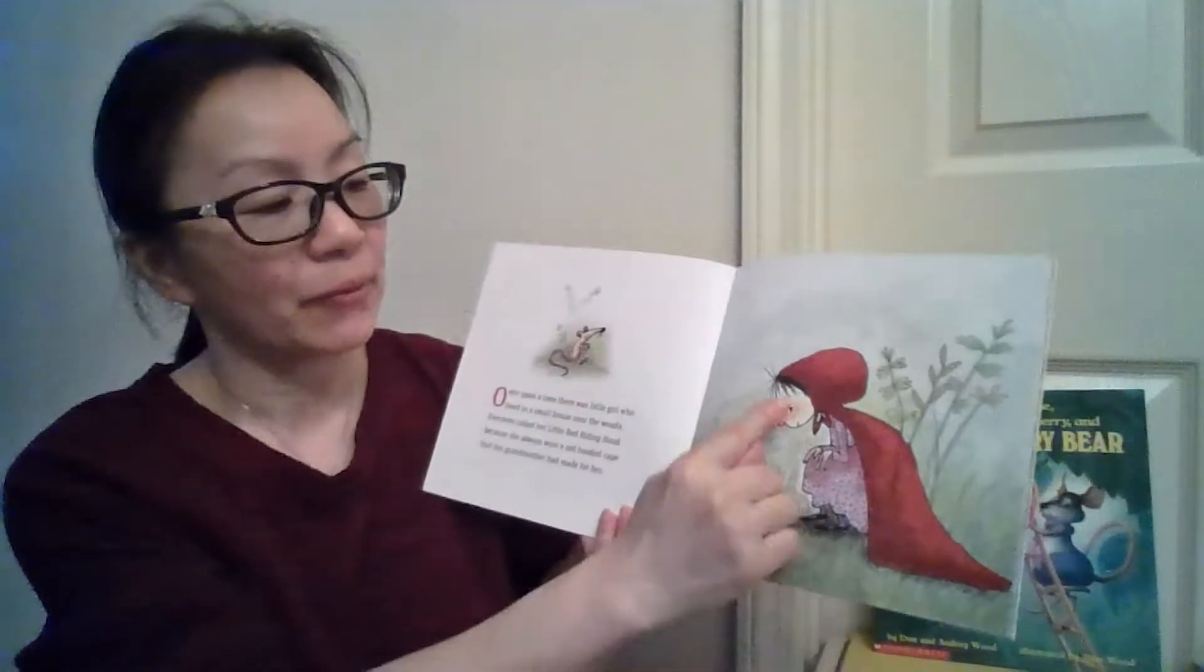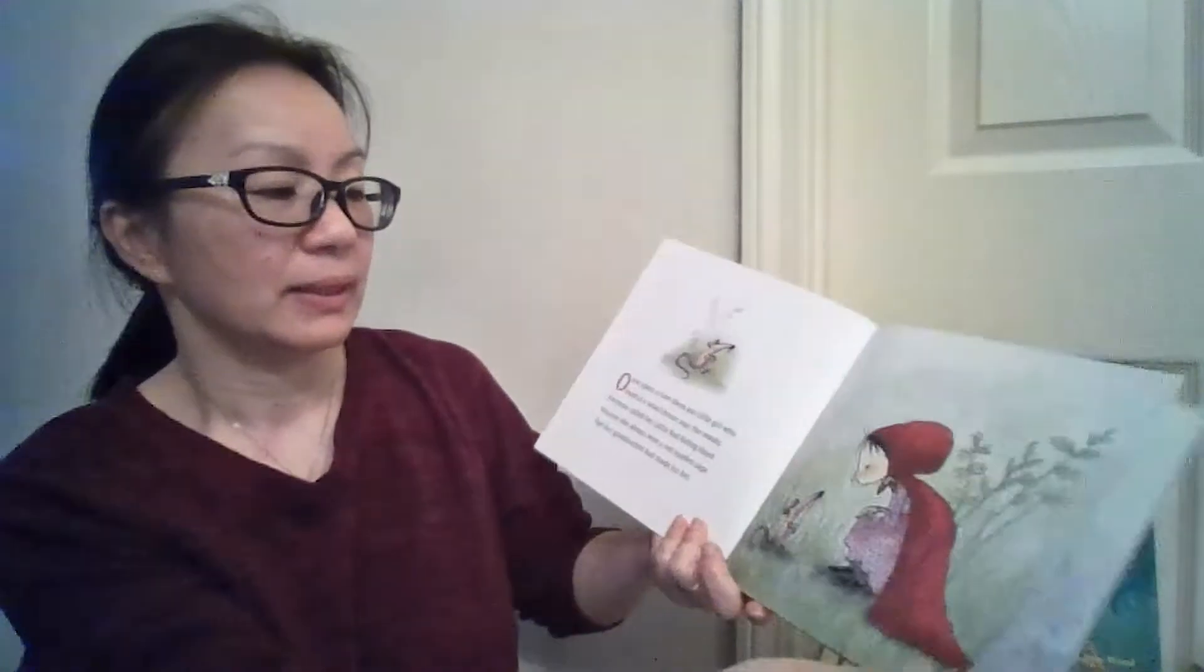Once upon a time, there was a little girl who lived in a small house near the woods. Everyone called her Little Red Riding Hood because she always wore a red hooded cap that her grandma had made for her. See that? Red hood. That's beautiful.